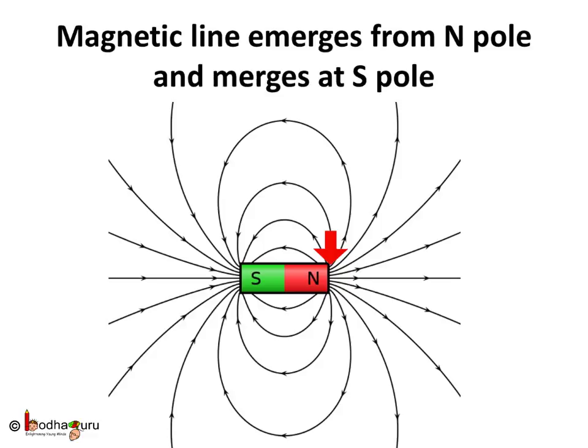The strength of magnetic field at any point depends on the closeness of magnetic lines, or you can say the density of magnetic lines there. Look, near the poles, the lines are very close to each other. Hence, the magnetic force is very strong there.